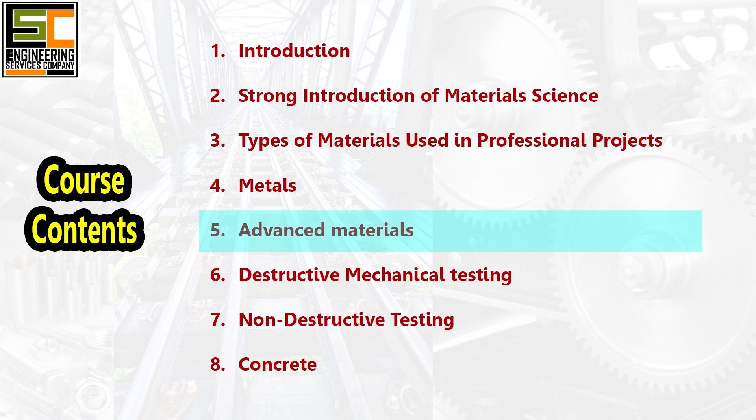the atomic or molecular level to possess superior properties or functionalities compared to traditional materials. Together we'll examine their key aspects and examples. Six: Destructive Mechanical Testing, which serves as a crucial tool in evaluating